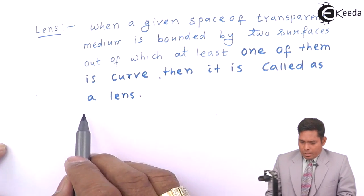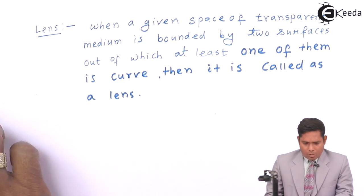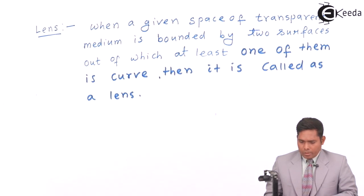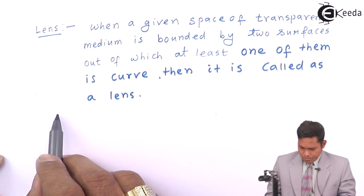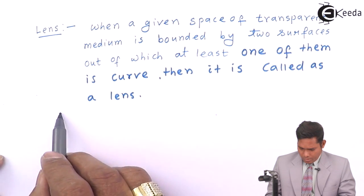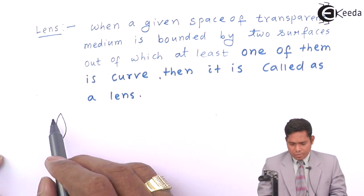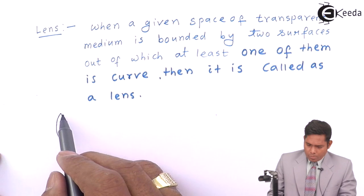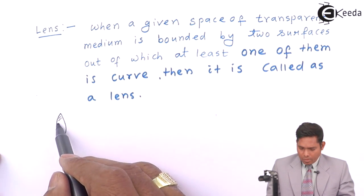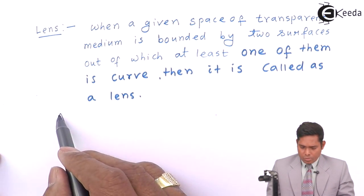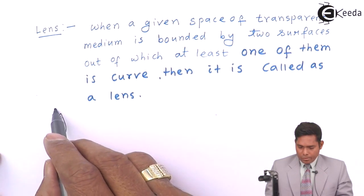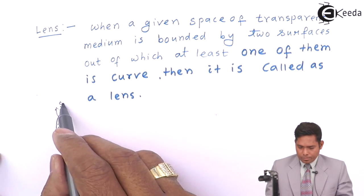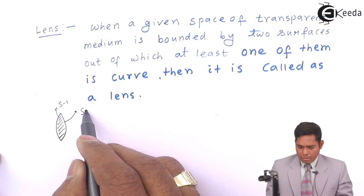Let us see how a lens is formed. These are the two curved surfaces which bind a medium — suppose this is glass. So if glass is given this shape, then this becomes a lens. This is surface number one and this is surface number two.